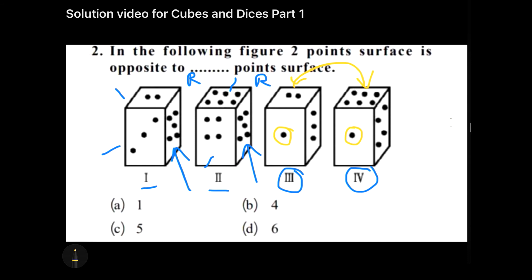And three was on the right and now four is on the right, so three and four are opposite to each other. So the pairs are one-five, three-four, and two-six.